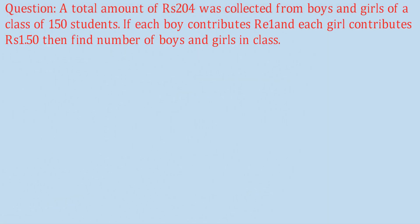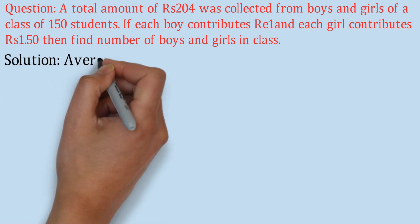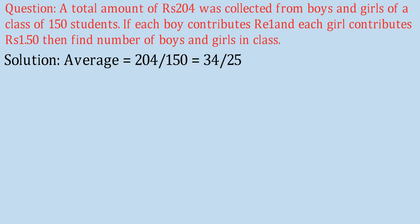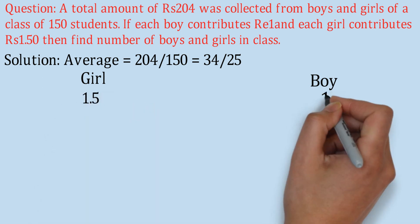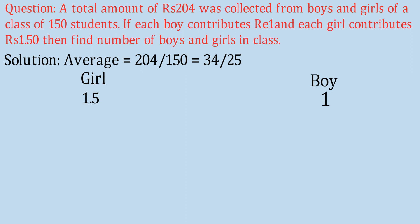A total amount of rupees 204 was collected from boys and girls of a class of 150 students. If each boy contributes rupee 1 and each girl contributes rupees 1.50, find the number of girls in the class. The average contribution per student = 204 ÷ 150 = 34/25. So the average contribution for the entire class is 34/25 rupees.